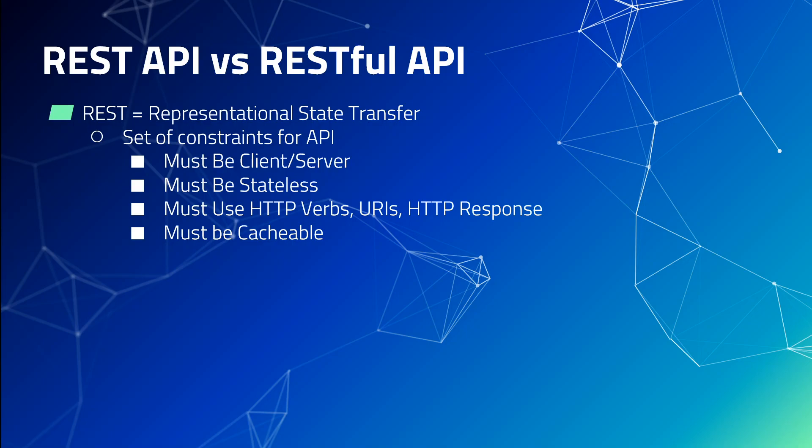The third constraint is that the API must be HTTP aware. Whatever request the client is sending should follow the HTTP verbs like GET, PUT, POST, and DELETE. All resources should always be referred to as URIs, or Uniform Resource Identifiers. Whatever response the server sends to the client should be HTTP — it should have a status and a body.